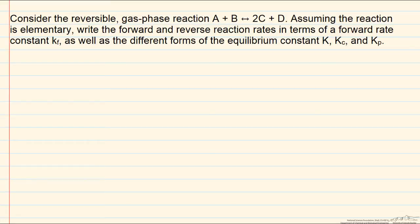This problem discusses the differences between different forms of the equilibrium constant that come up in dealing with reversible reactions in kinetics. Let's take a look at this reaction of A plus B going to 2C plus D. We're told that this is a reversible gas phase reaction, and we'll be assuming ideal gas conditions.